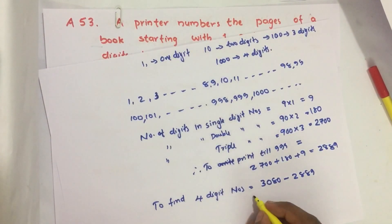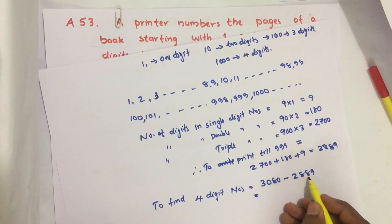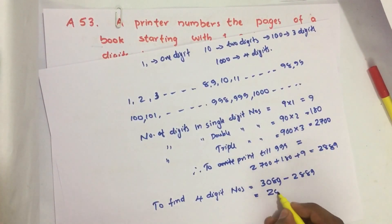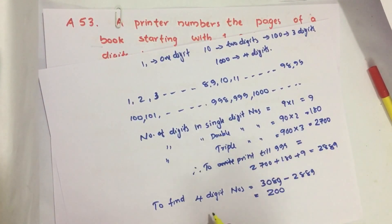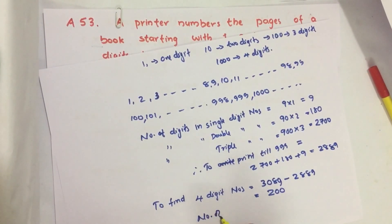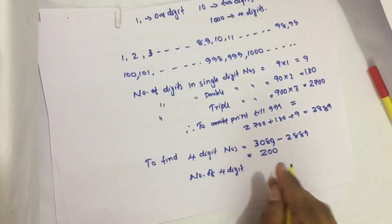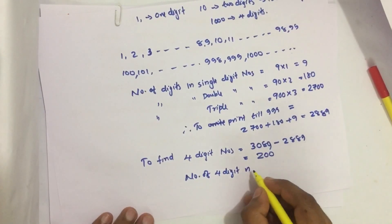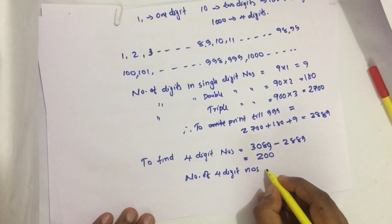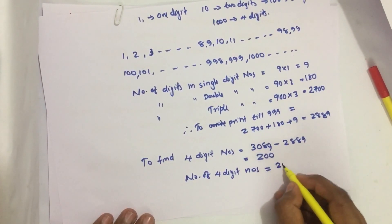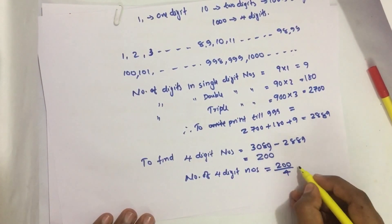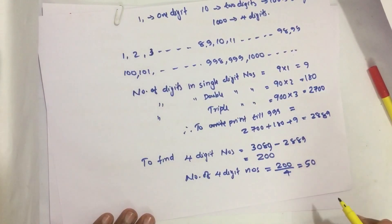The number of four-digit numbers equals 200 divided by 4, which is 50.